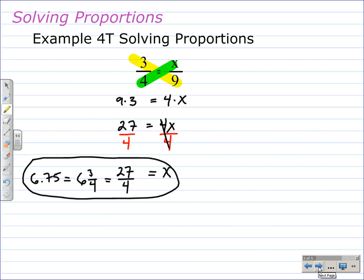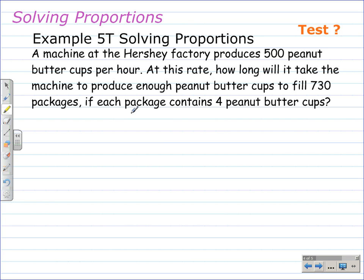Moving on to the next example, it's a problem solving situation, Example 5T. A machine at the Hershey factory produces 500 peanut butter cups per hour at this rate. How long would it take the machine to produce enough peanut butter cups to fill 730 packages? Each package contains 4 peanut butter cups. So we're going to set up a ratio to solve this problem first. What's actually being compared here is in the first sentence.